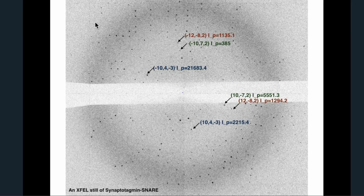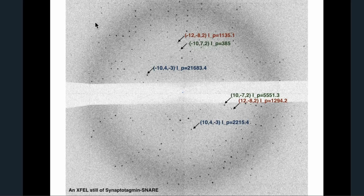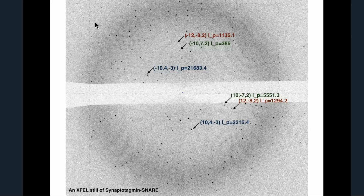As one example: a diffraction pattern from a crystal of our synaptotagmin SNARE complex shows three Friedel mates that should have very similar intensities. But looking at the green pair, the partial intensity for these two reflections — which should be the same — differs by about 4,500 intensity units. This is because of crystal orientation and different locations where the Ewald sphere overlaps the reciprocal lattice volume. We need to correct for this missing intensity before merging these reflections.